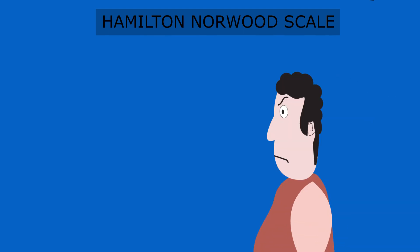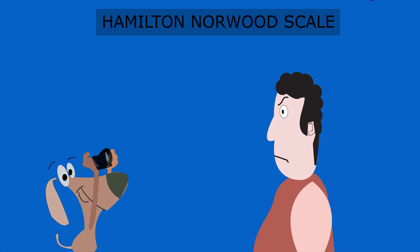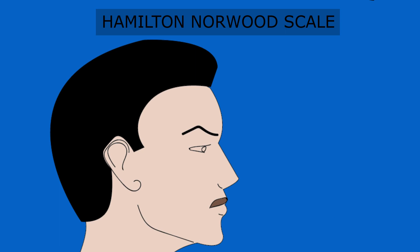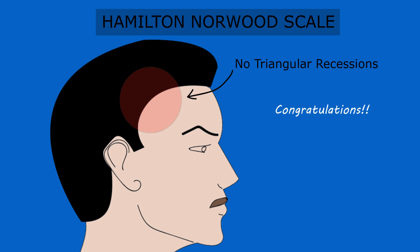First, you are going to need a photo of you from the side view. It's okay, you don't need a professional photographer — just ask your buddy. If the photo shows no triangular recessions of the hairline at the temporal areas, congratulations, you don't have hair loss — you only need assurance. We call this the Norwood Stage 1.